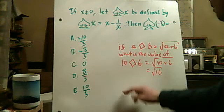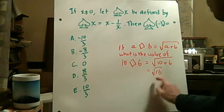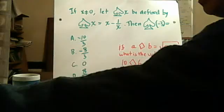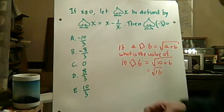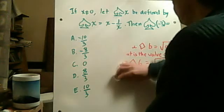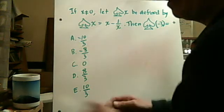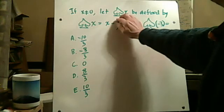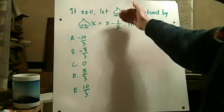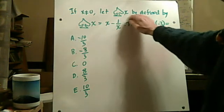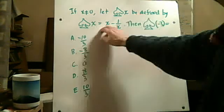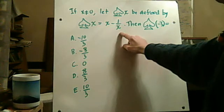Now here's a problem for you to do. It says if x is not equal to 0, then let this symbol—this is a spade from a deck of cards—spade x be defined by spade x equals x minus 1 over x. Then what is the spade of negative 3?